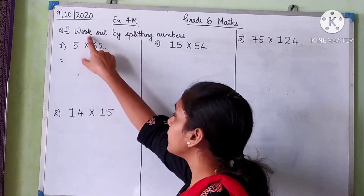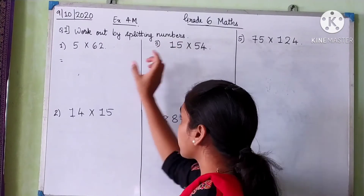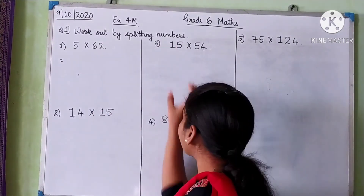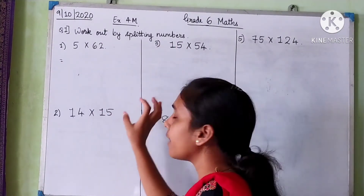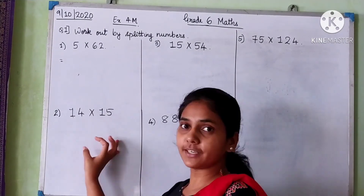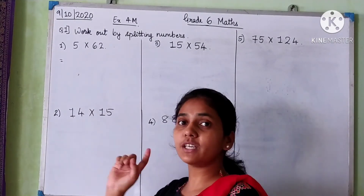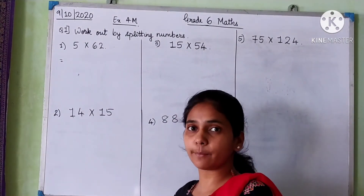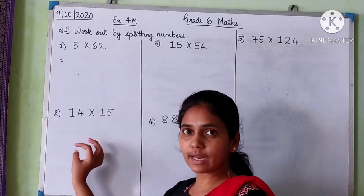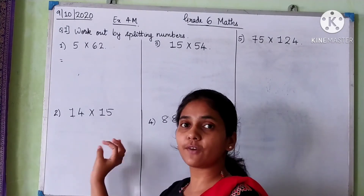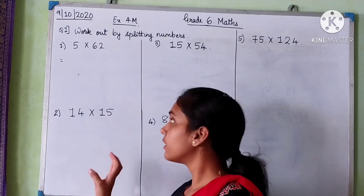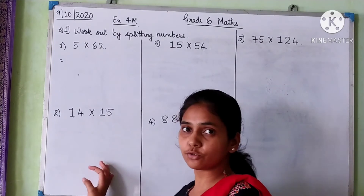The question is: work out by splitting numbers. These are all multiplication sums and you have to split the numbers in them. You can split one number or you can split both numbers. You have to split the numbers into their factors and then solve.